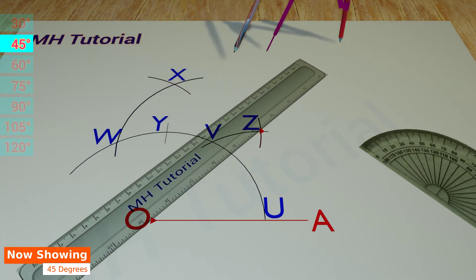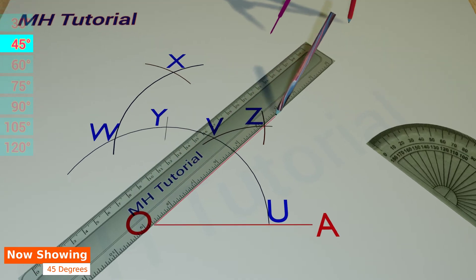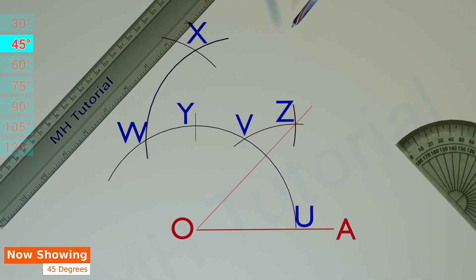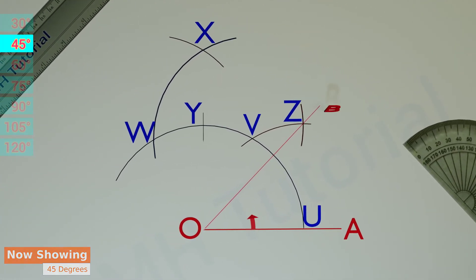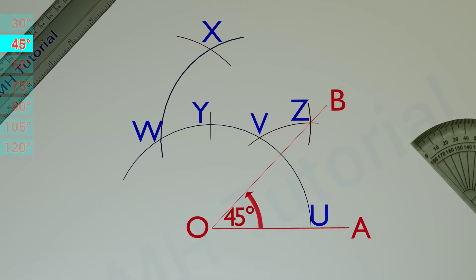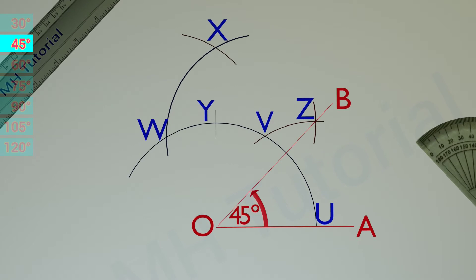Finally, with the help of a ruler and a pencil, point Z and point O are connected. This is the line segment OB. Hence, angle AOB is a 45 degree angle.